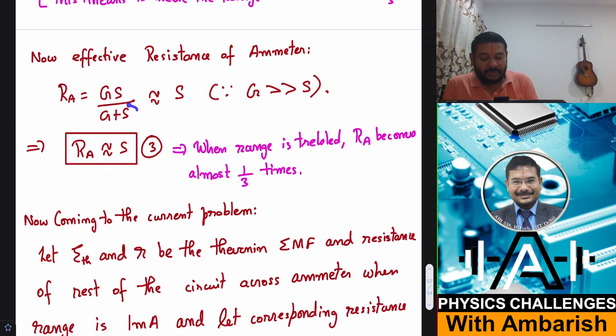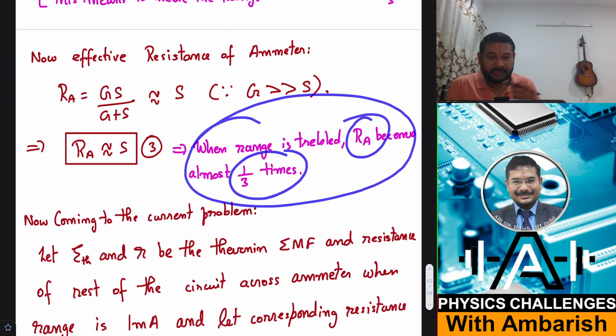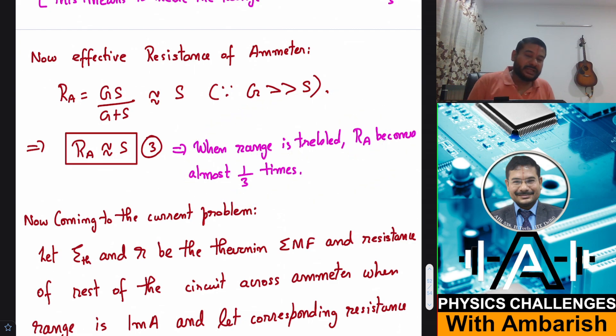So denominator can be approximately taken as G itself and therefore we can say that ammeter resistance is almost equal to the shunt resistance when we are talking about converting micro to milliampere range. Therefore we can also say that when the range is tripled for the ammeter, the total resistance becomes 1 by 3 times approximately.